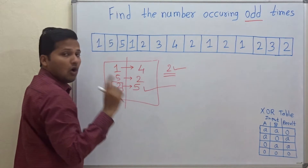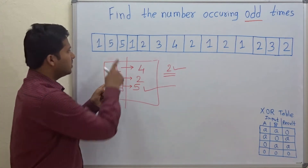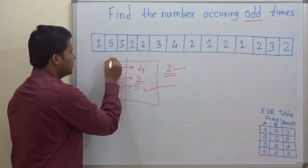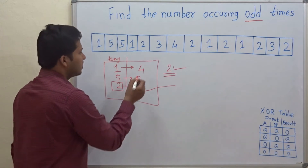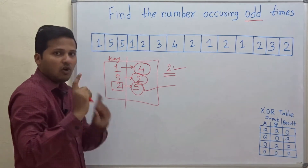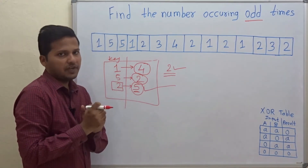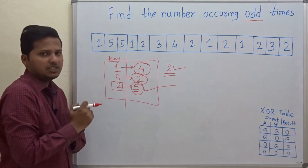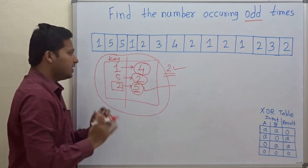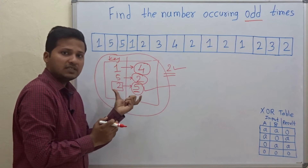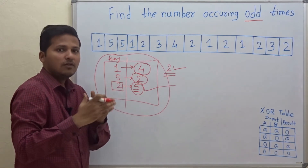There are two steps here. First, count the number of occurrences of each element. Second, check whether that count is odd or not. Out of 4, 2, and 5, the value 5 is odd — so 2 is occurring odd number of times. But this method is inefficient in space because you consume extra space for the hash table. Is there another method that uses no extra space but finds the number occurring odd number of times with the same time complexity?